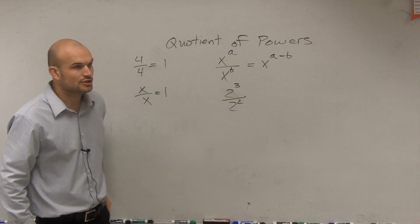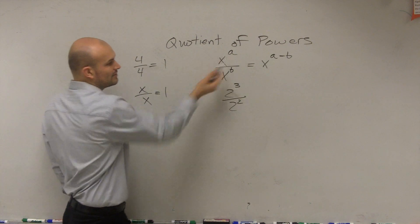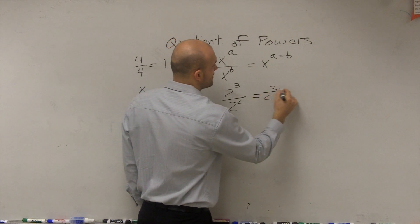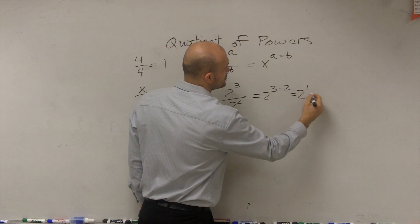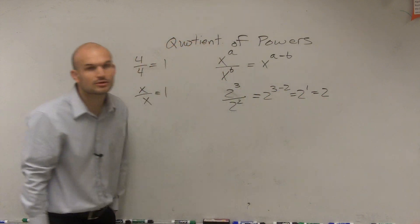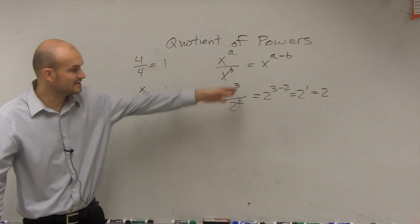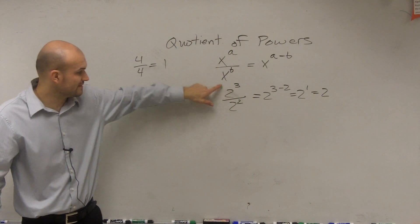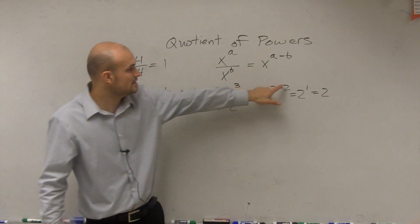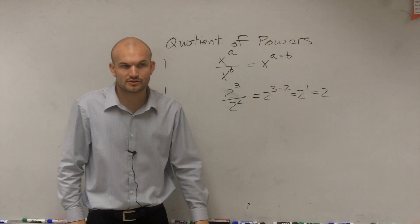So if I did 2 cubed divided by 2 squared, following this definition, that equals 2 to the 3 minus 2, which equals 2 to the first, which equals 2. Correct? Following the definition, right? As long as you have the same base, you take the exponents, subtract them, and you get 2 to the first power.